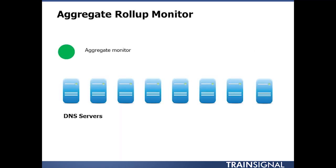Now let's take this as an example. Suppose you're using a dependency roll-up monitor to watch eight separate DNS servers. You've got eight DNS servers lined up in a line. You could create a high-level monitor that undergoes a state change once only five of the DNS servers become unavailable.